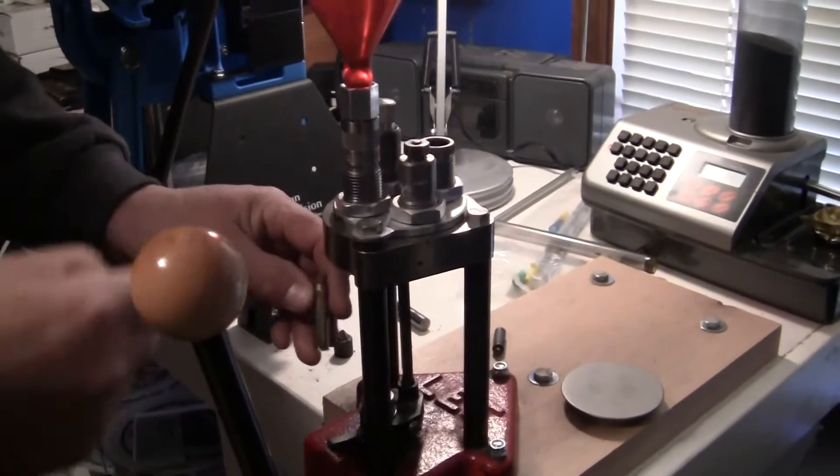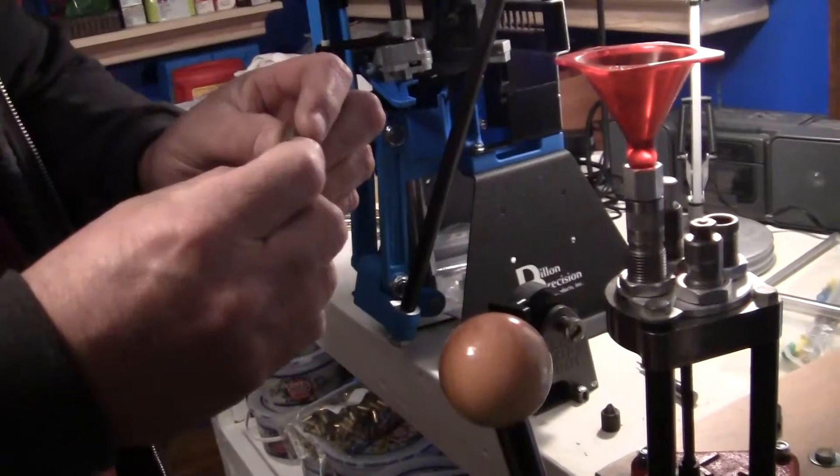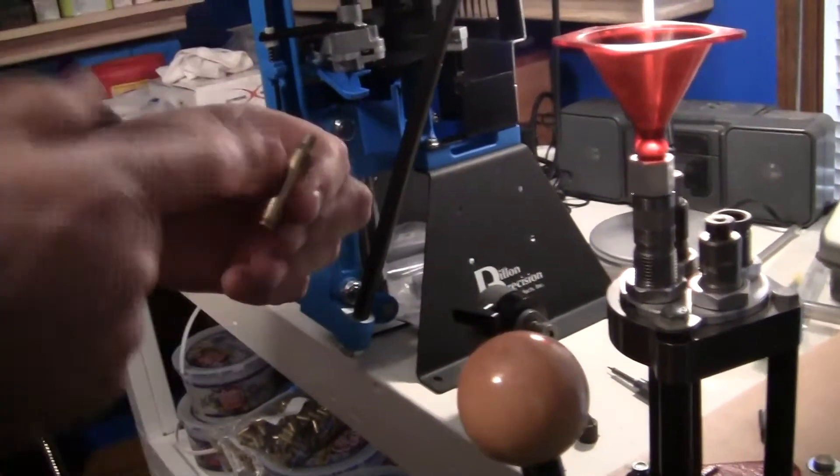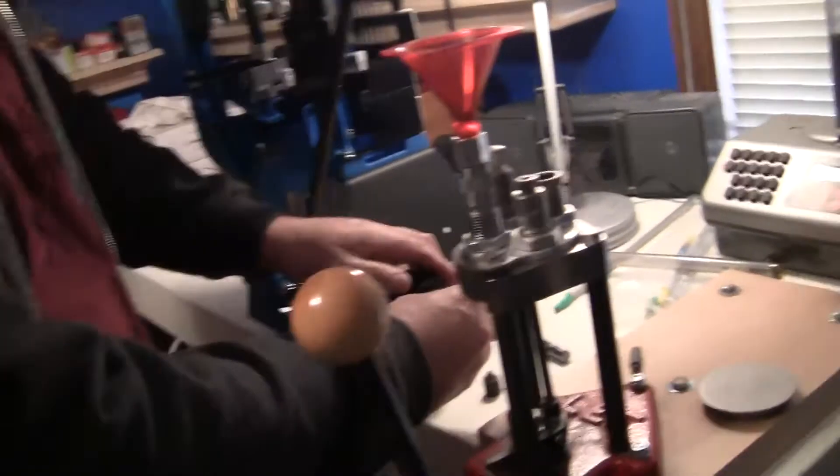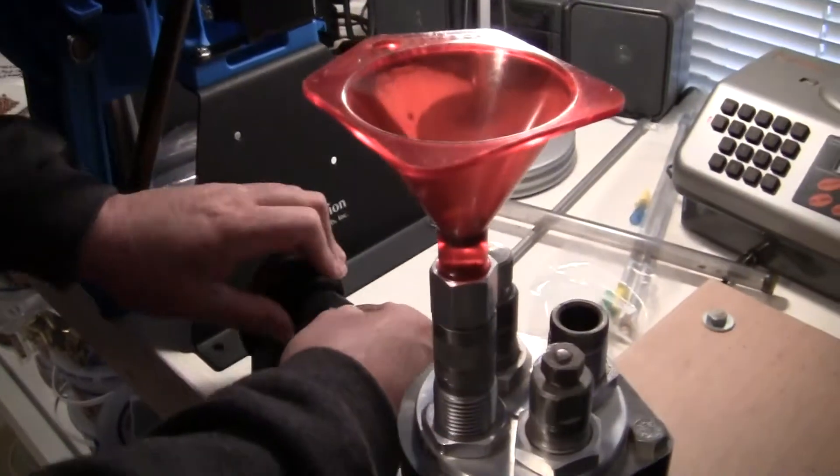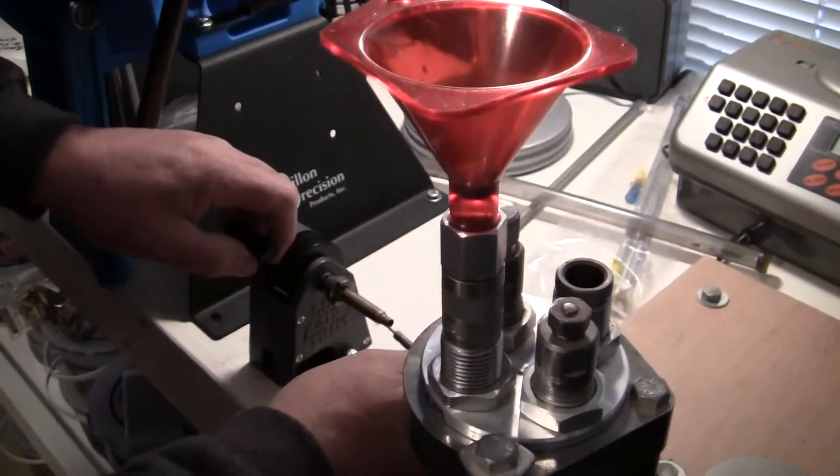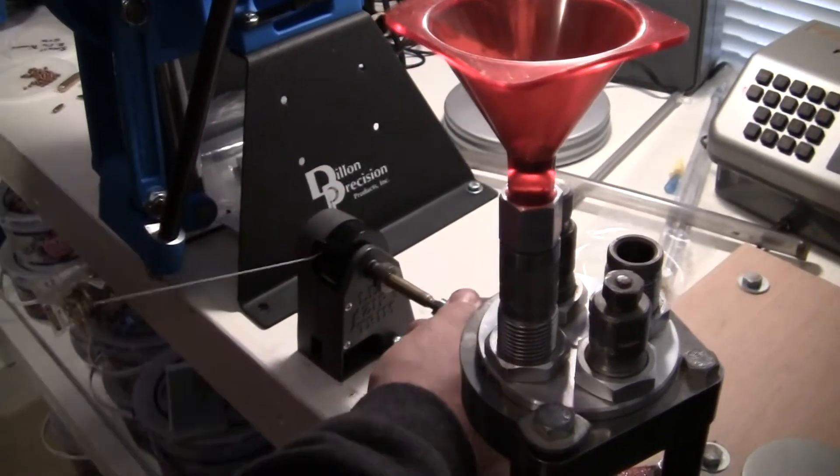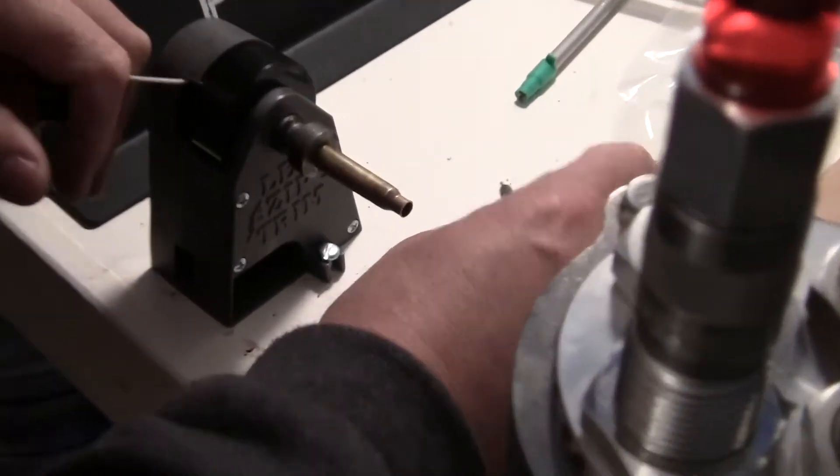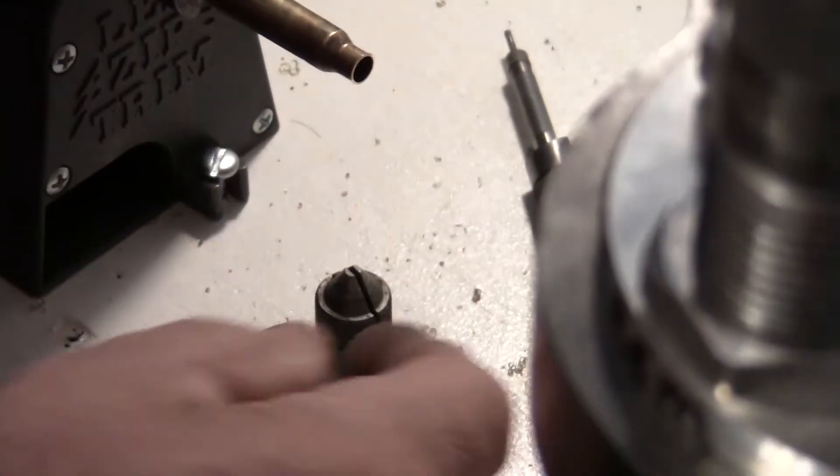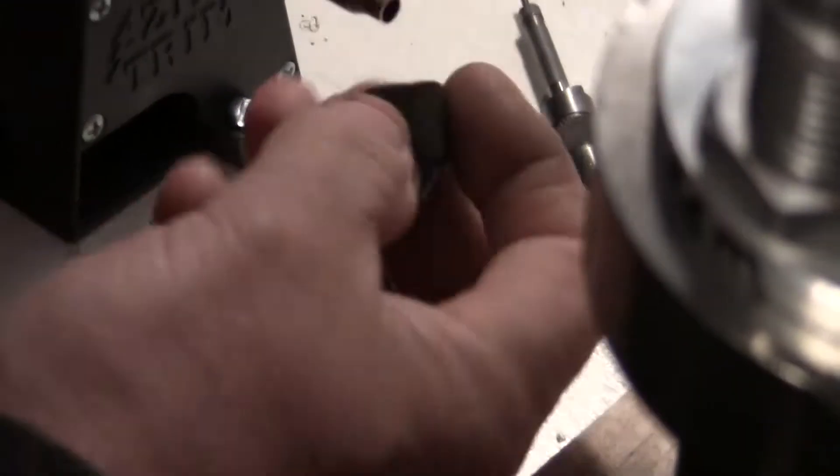Before it goes down the bottom, turn to the next station here. I'm gonna have to trim this because this is a 5.56 case, so I'm going to trim it to factory specs. Usually just a couple pulls to do it right there, but it trimmed it on down. You see the shavings down here.